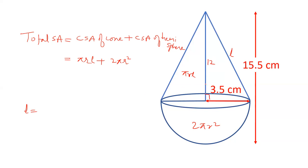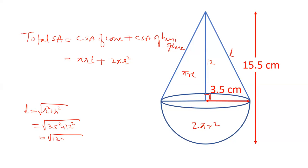Slant height हम निकाल चुके हैं — इसकी height 12 है। Slant height का formula है: L = √(R² + H²)। यह Pythagoras theorem है, क्योंकि यह right angle triangle है। R की value 3.5 है, तो 3.5 squared = 12.25। H = 12, तो 12 squared = 144। दोनों को add करने पर 156.25 आता है, और √156.25 = 12.5 cm।